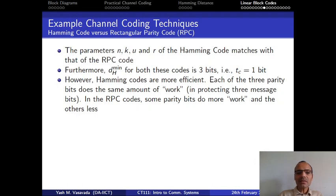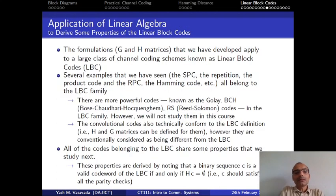And so Hamming codes are actually considered to be more better organized codes out of all of the linear block codes of small lengths that we have seen so far. Now, this formulation of G and H matrices that we have developed applies to a very large class of channel coding schemes which are known as linear block codes or LBCs.